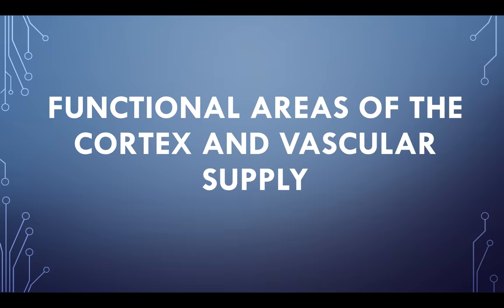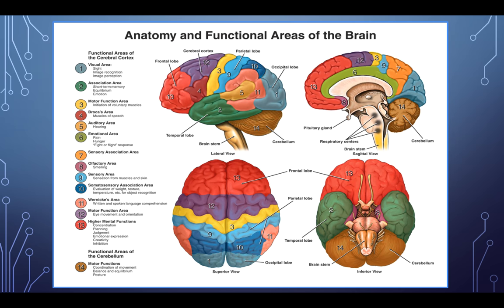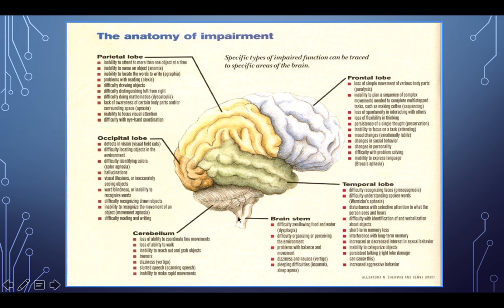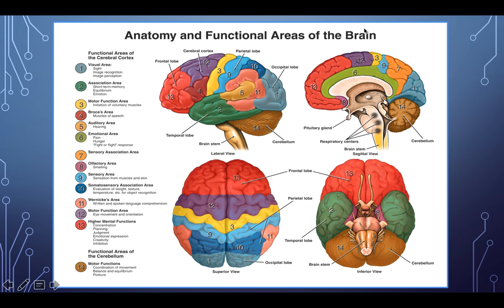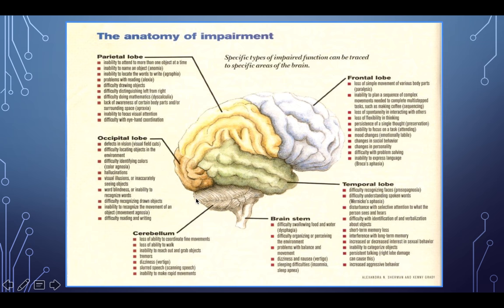Now looking at functional areas of the cortex and vascular supply. This image maps all the different cortical areas. The companion image shows what happens when those areas don't work properly. For the test, I'll ask about responsibilities of cortical areas — for example, if a patient has difficulty identifying and verbalizing about objects, which lobe is implicated? The answer is temporal.